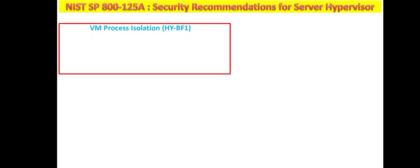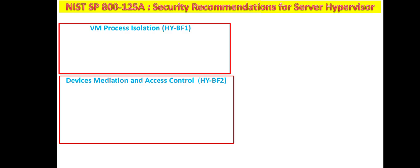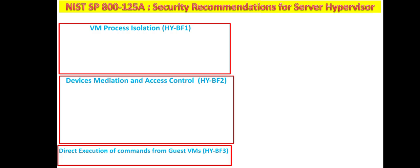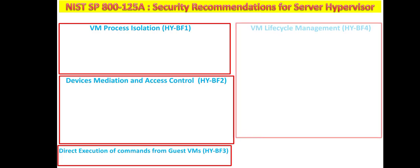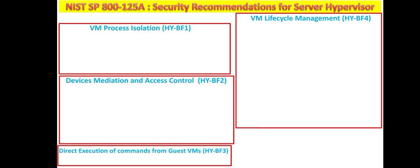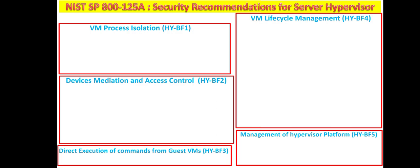There are five baseline functions related to server-based hypervisor platforms. NIST has allotted different codes to these baseline functions starting from BF1 till BF5. The second baseline function is device mediation and access control, the third is direct execution of commands from guest VMs, the fourth is VM lifecycle management, and the last is management of the hypervisor platform.